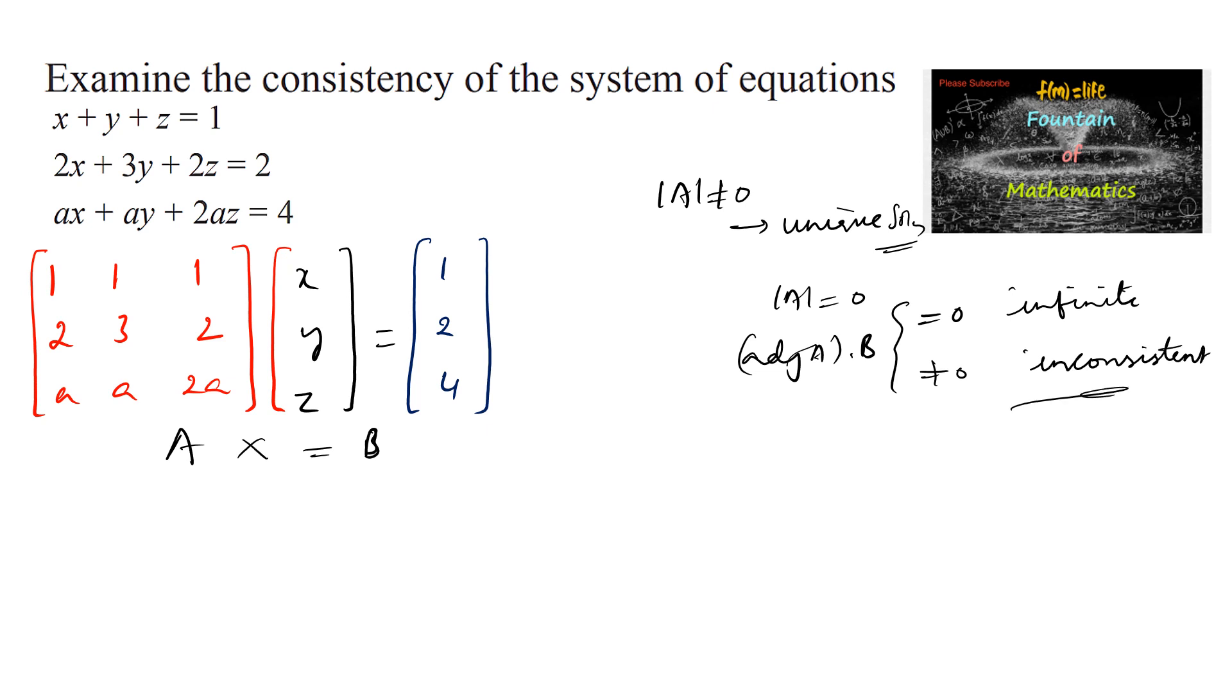So let's find the determinant of the given matrix. The determinant of [1, 1, 1; 2, 3, 2; a, a, 2a]. Let's expand using the first row.